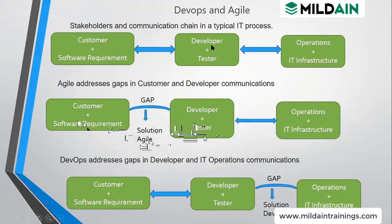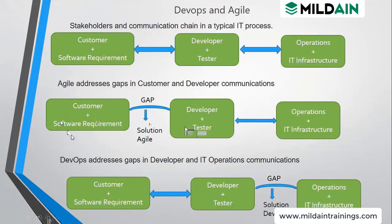Earlier what was happening is a customer gave a requirement and the business analyst passed it to developers, but then the customer would say 'I asked for A and you gave me B.' To fill this gap they involved developers and testers from the beginning of the software development cycle. Now developers and testers can say from the start what is feasible and how it can be done differently, establishing clarity at the beginning.